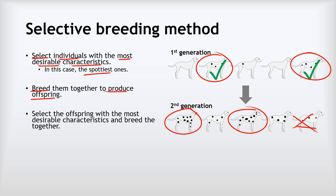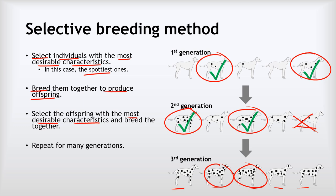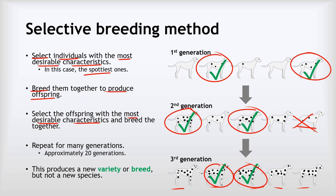From the offspring, we again select the ones with the most desirable characteristics and breed them together. That produces a third generation, and again we see variation in spottiness. We select the spottiest and breed them. The general idea is that we repeat this process for many generations, getting gradually more spotty with each generation. If we do this for about 20 generations, we end up producing a new variety or new breed. Importantly, these are not a new species — the very spotty dogs can still breed with unspotty dogs because they're still dogs, just a different variety.